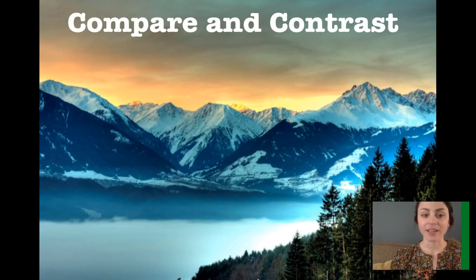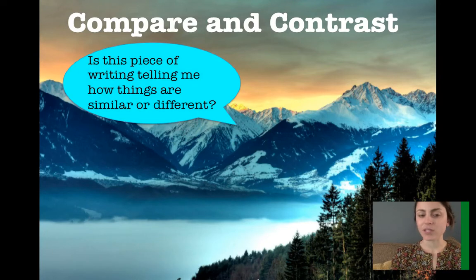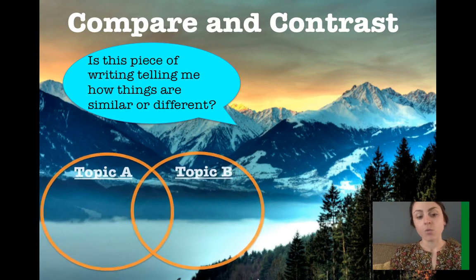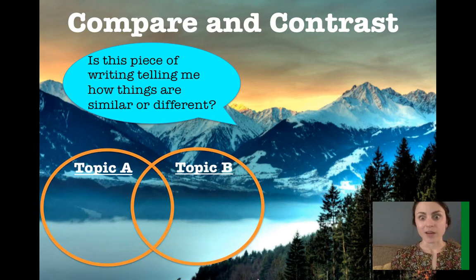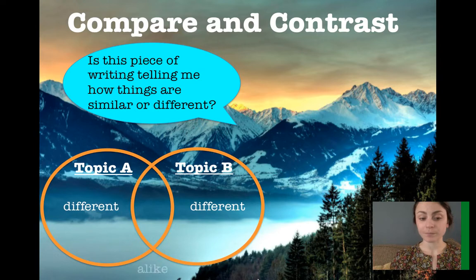Compare and contrast. You have to ask yourself: is this piece of writing telling me how things are similar or different? When we've determined that it is compare and contrast text structure, we use something called a Venn diagram. On the outsides of the Venn diagram, you put the information that is different, and on the inside is where the components are alike.